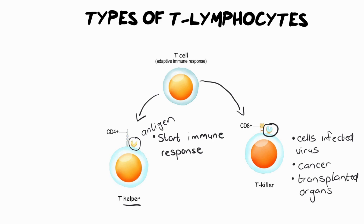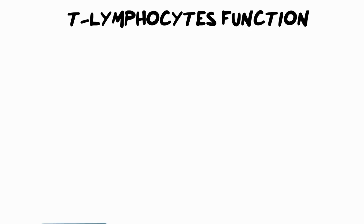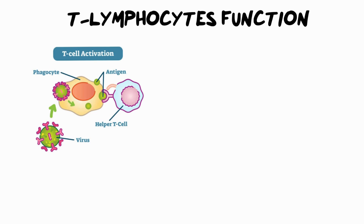Let's expand a little bit more and talk about how you actually activate those helper T cells. I've got a diagram here to show you what is happening step by step. T lymphocytes are generally triggered by viruses — they can also be triggered by bacteria, but I'll come back to that when we do B lymphocytes. On the outside of the virus there are those antigens I mentioned earlier, which signify them as foreign invaders. A phagocyte or another white blood cell, which is non-specific, will come in first.